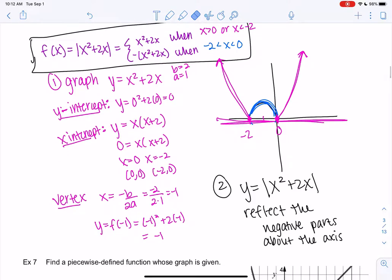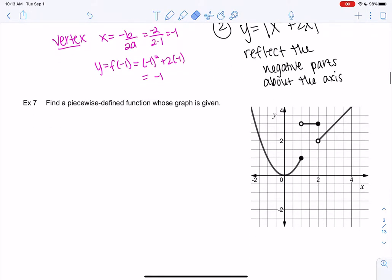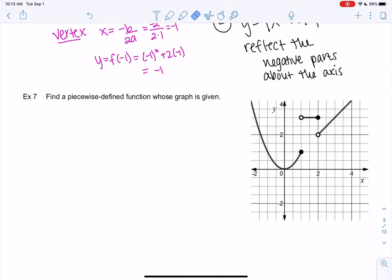All right, and let's just do one final example going backwards. So now we have a graph, a piecewise defined function with a graph on the side, and we want to find the function. So it looks like the first piece, I'm just going to go from left to right, is a parabola. Endpoint is included. It looks like that endpoint is 1. And it looks like it's just the traditional x-squared parabola.